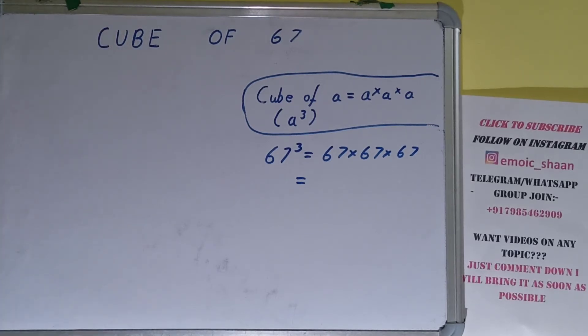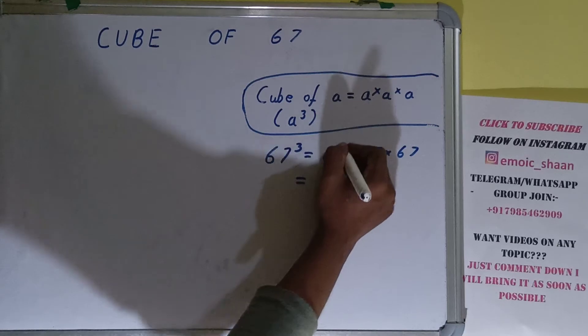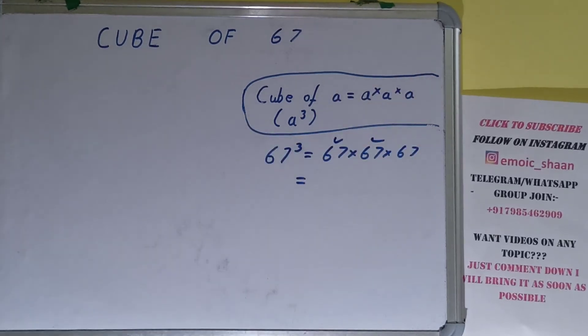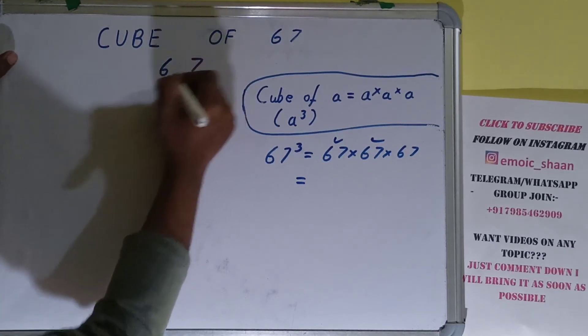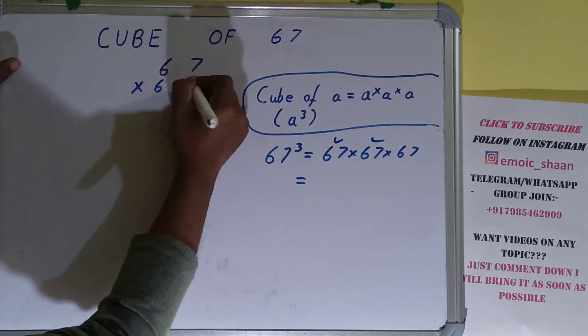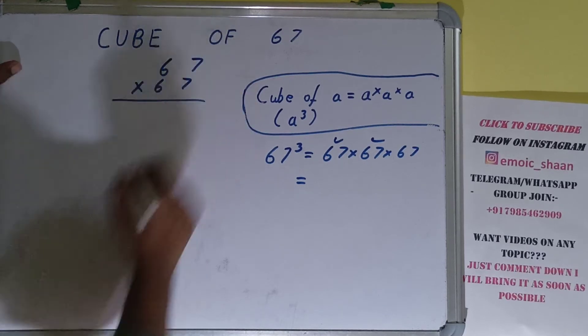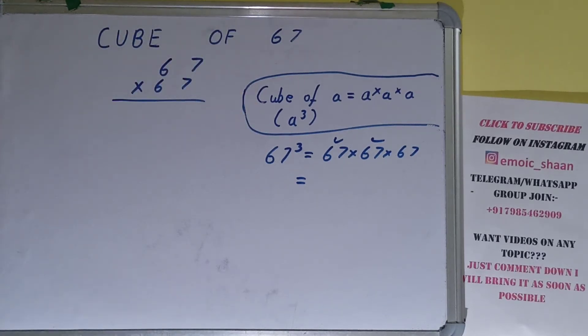multiplication here. We'll first multiply the first two terms, and whatever answer we get, we'll multiply with the third term. So let's try it out: 67 × 67. Now, whenever you are doing multiplication or